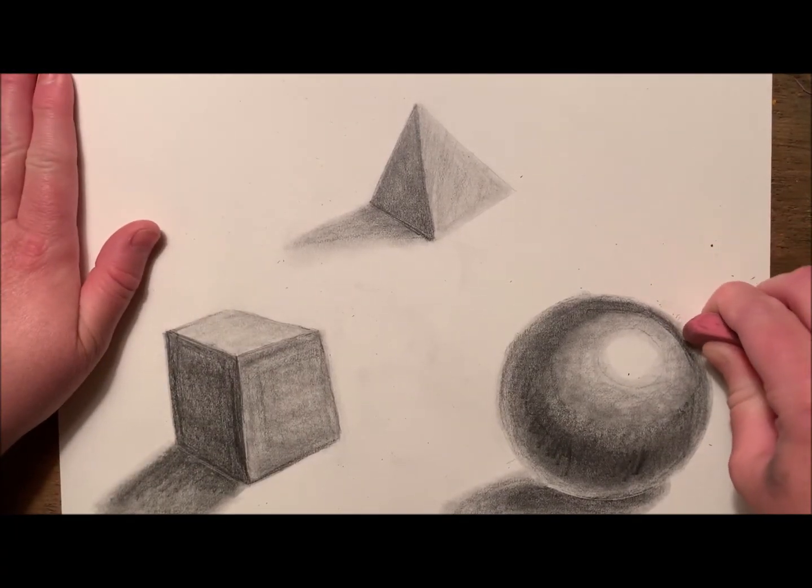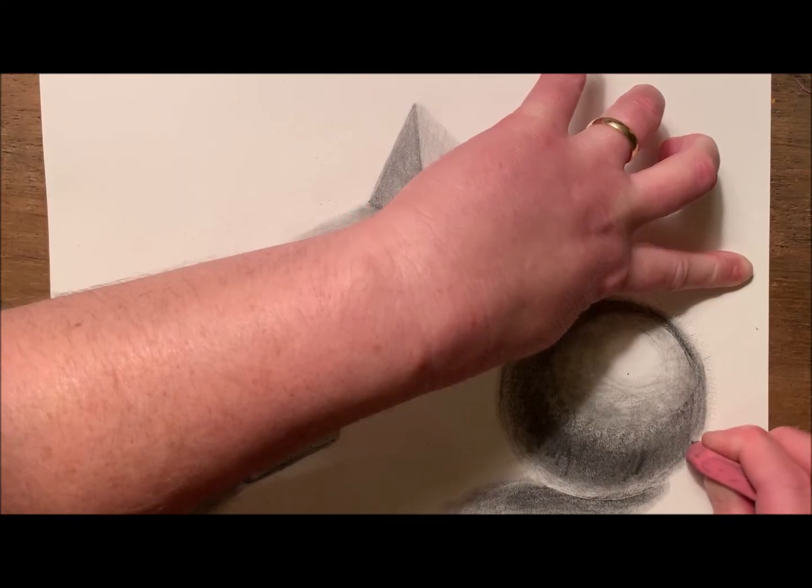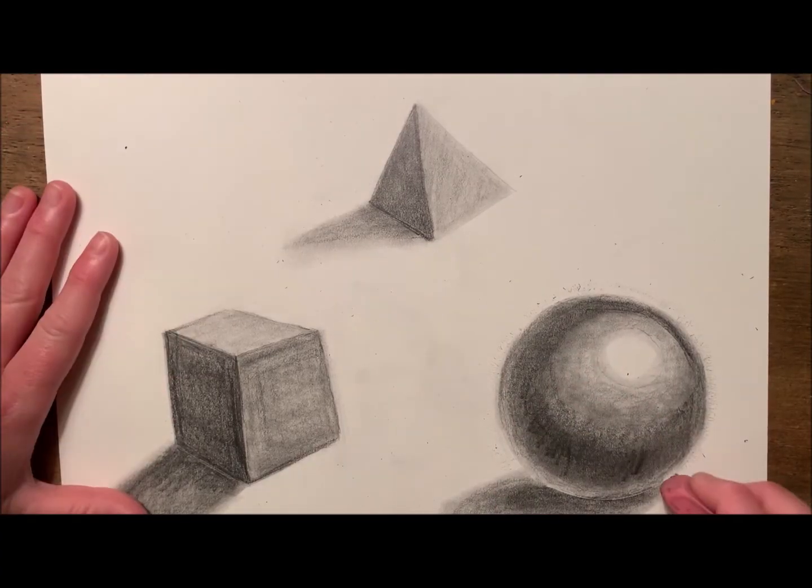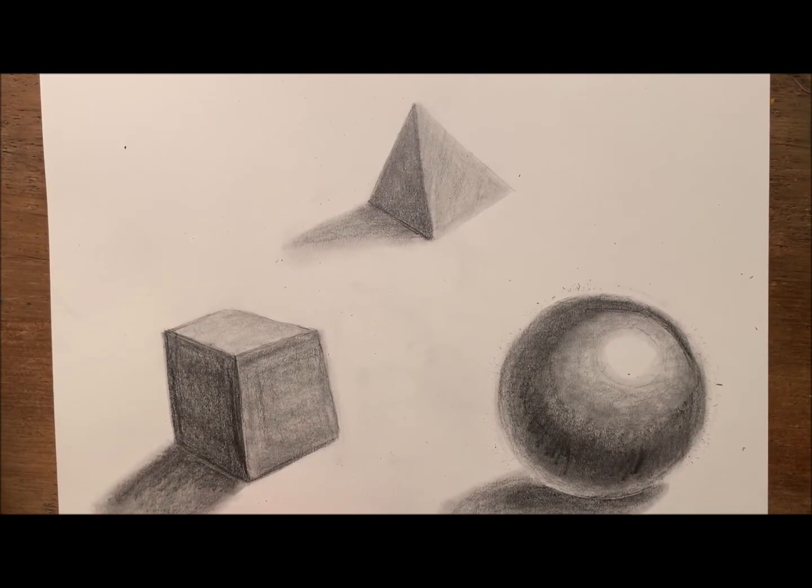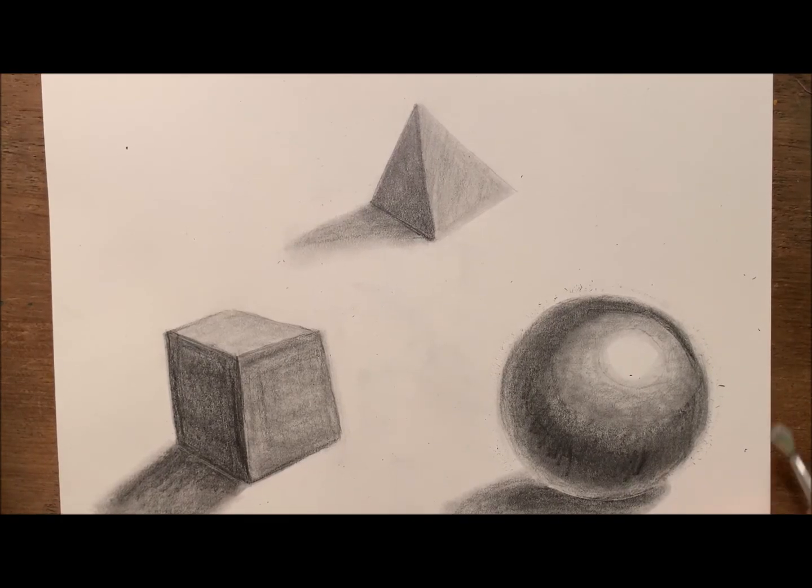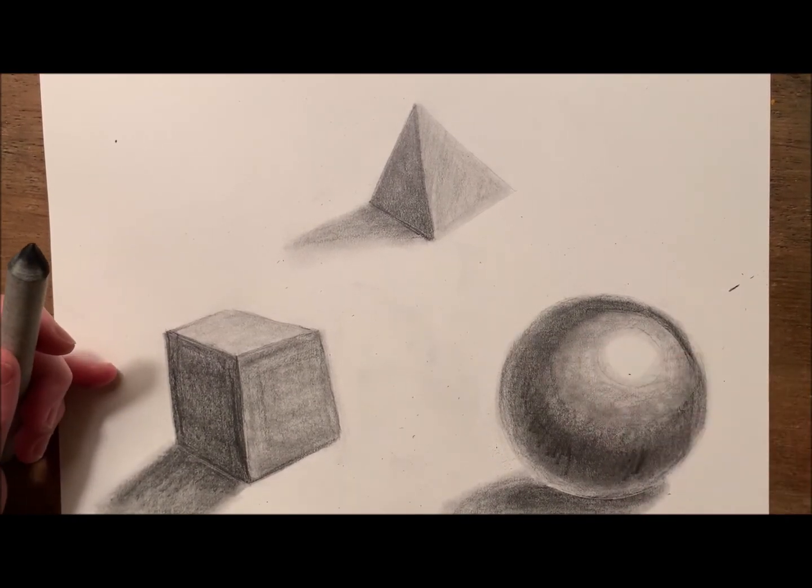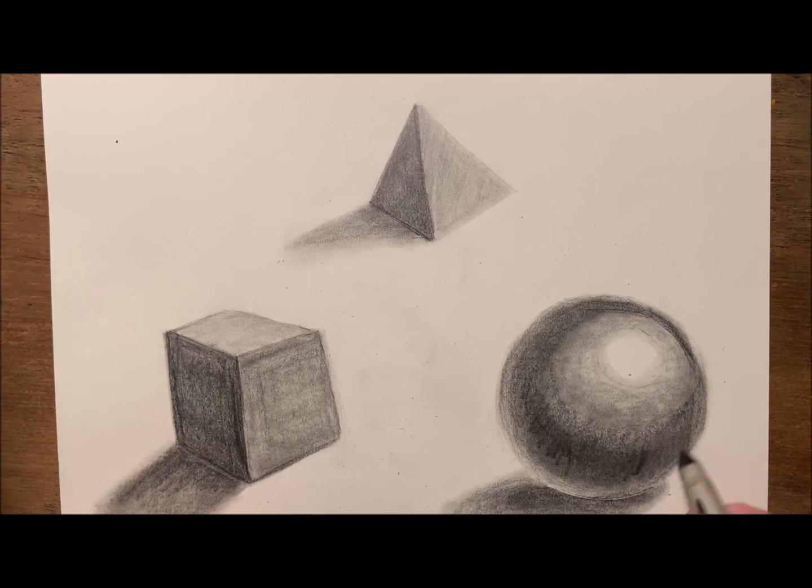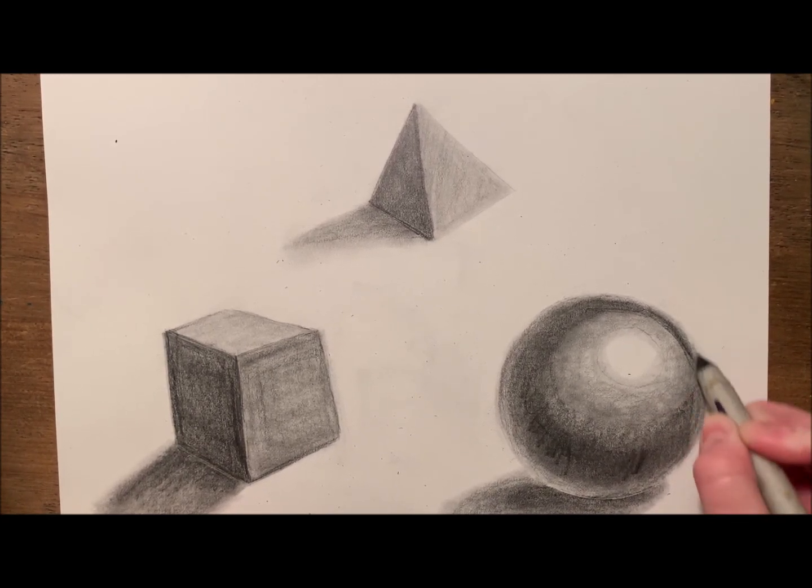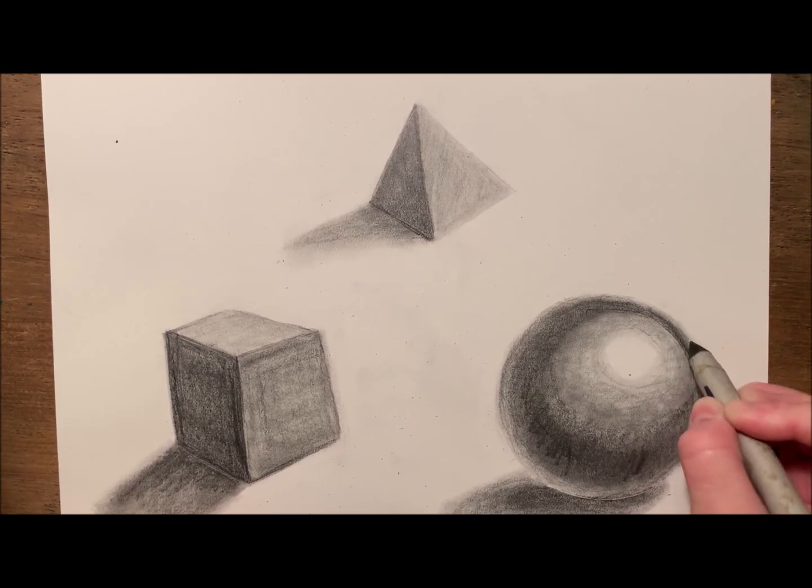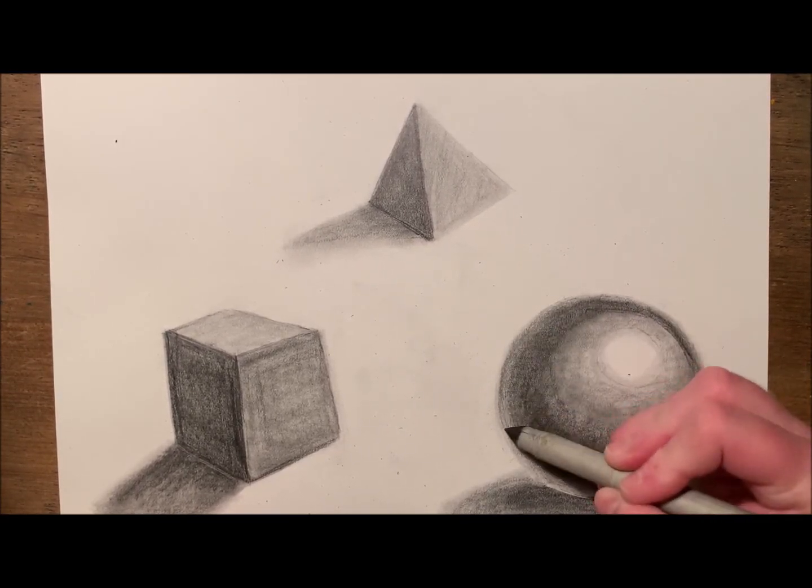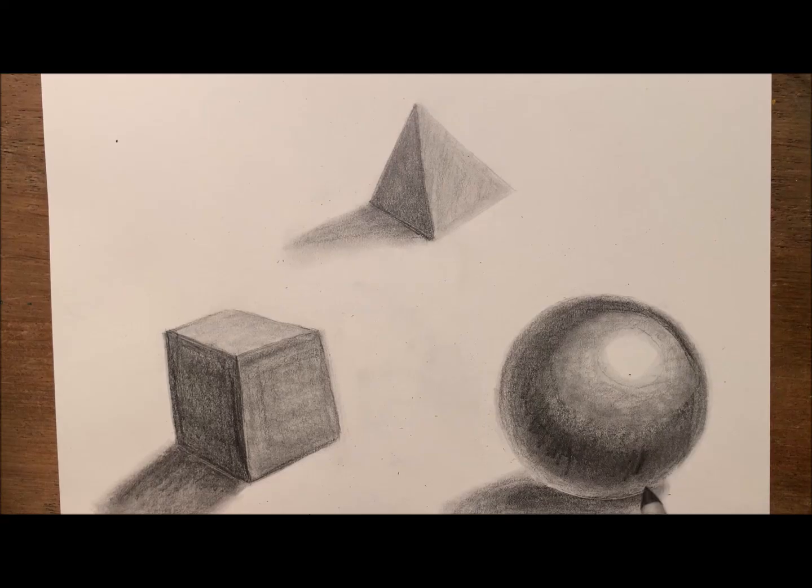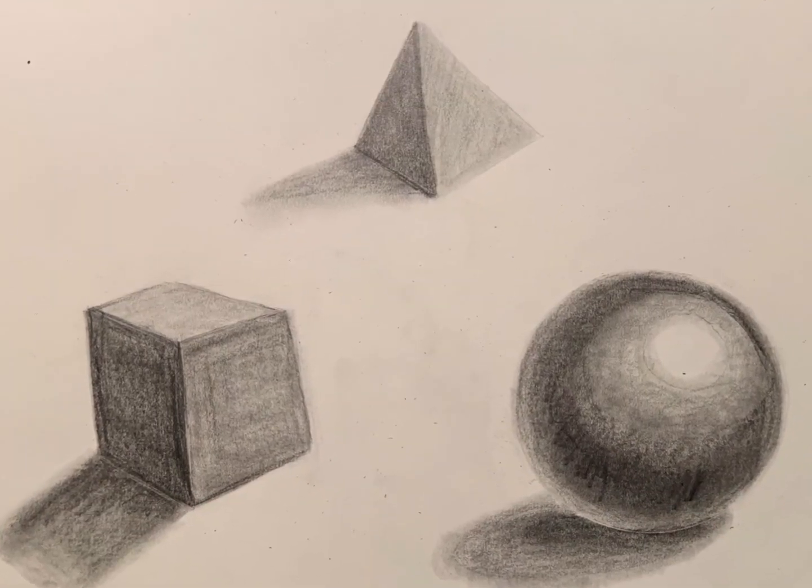Next, I'm going to take my eraser to clean up the edges of my sphere. The final touch is to go back with my blending stump and clean up any imperfections. And there we have our three-dimensional shaded shapes.